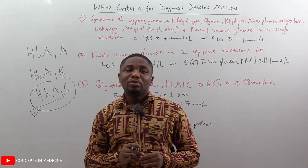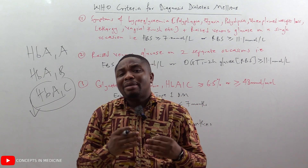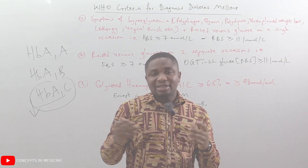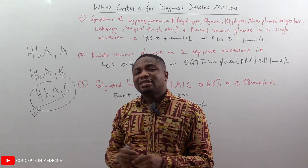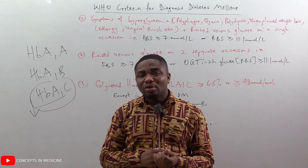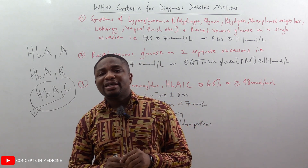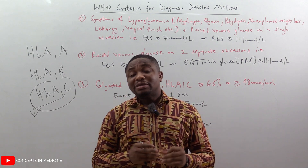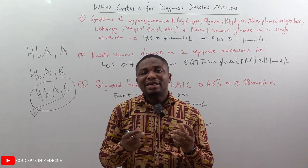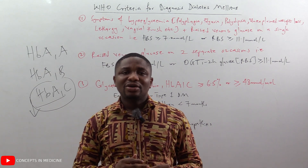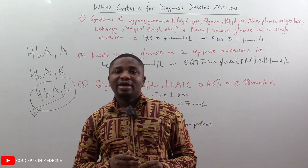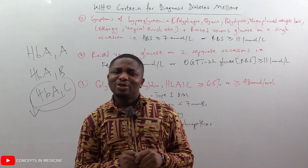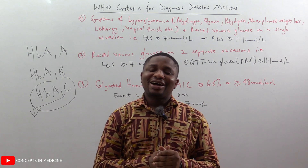So HbA1c, also called glycated or glycosylated hemoglobin, tells us about the amount of glucose bound to HbA1c — the C subtype of HbA1, the normal adult hemoglobin — over a time span of eight to twelve weeks, that is two to three months. Simply put, it measures the mean level of glucose in the blood over a period of eight to twelve weeks, or two to three months.